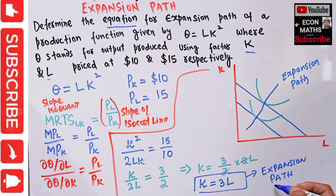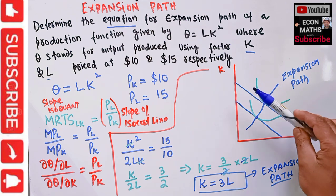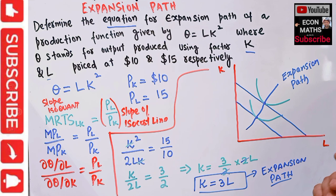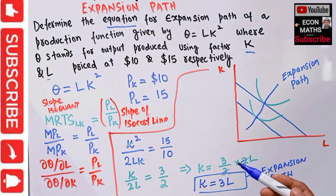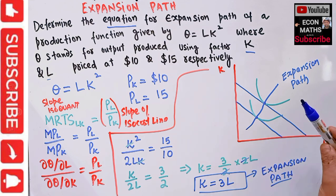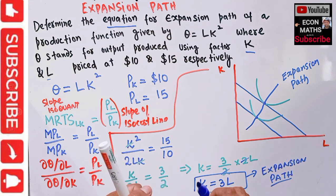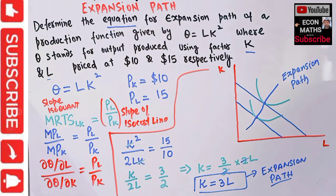The expansion path tells us that as the firm produces higher and higher levels of output, how do the optimal levels of capital and labor change. It shows us how factor proportions change when output changes, holding the relative factor prices constant. I hope I made myself clear in this video. Thank you.